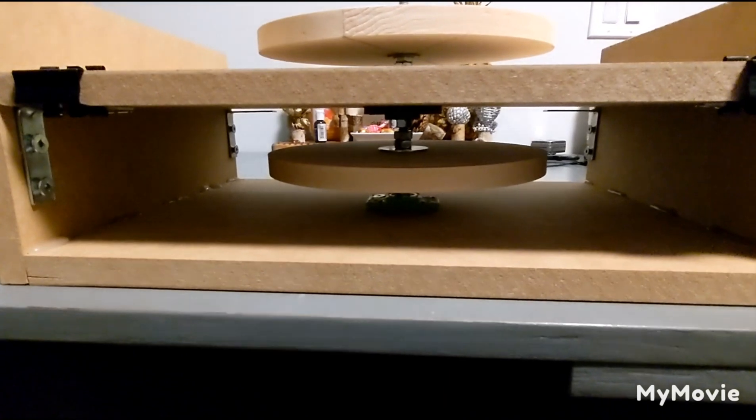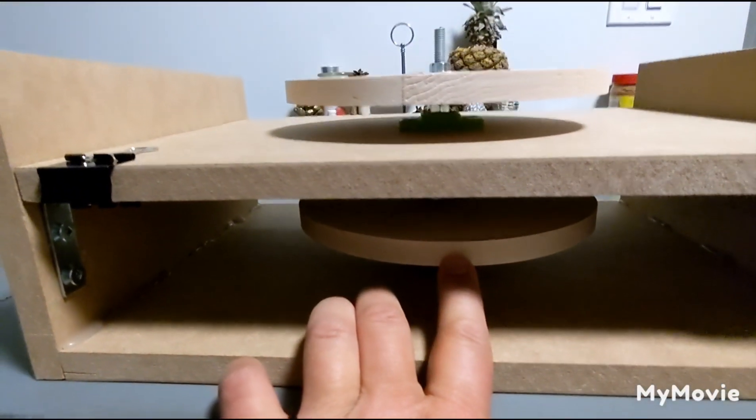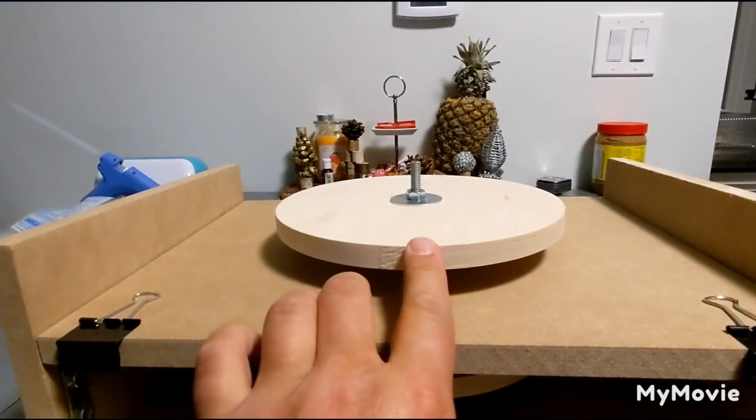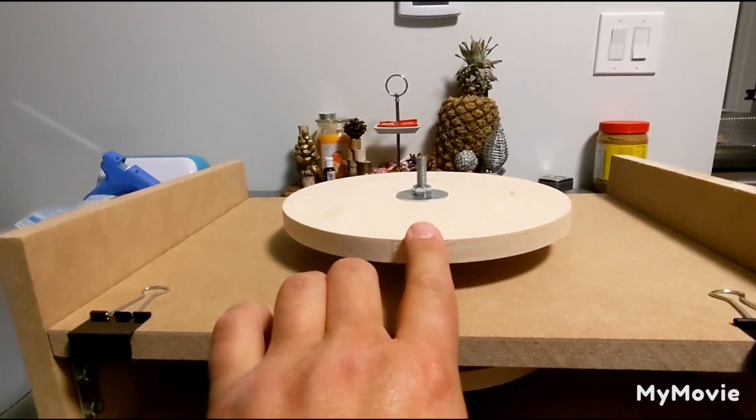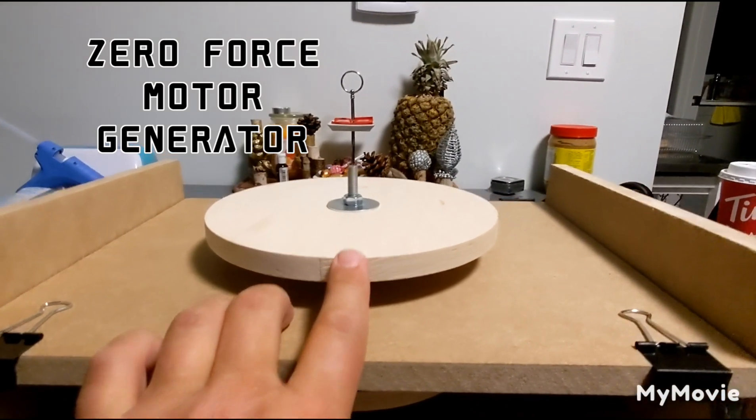As you can see, I have two wheels going. The zero lens effect motors can be this one, and then this motor, this wheel here, is where I'm going to put the lens free coils.